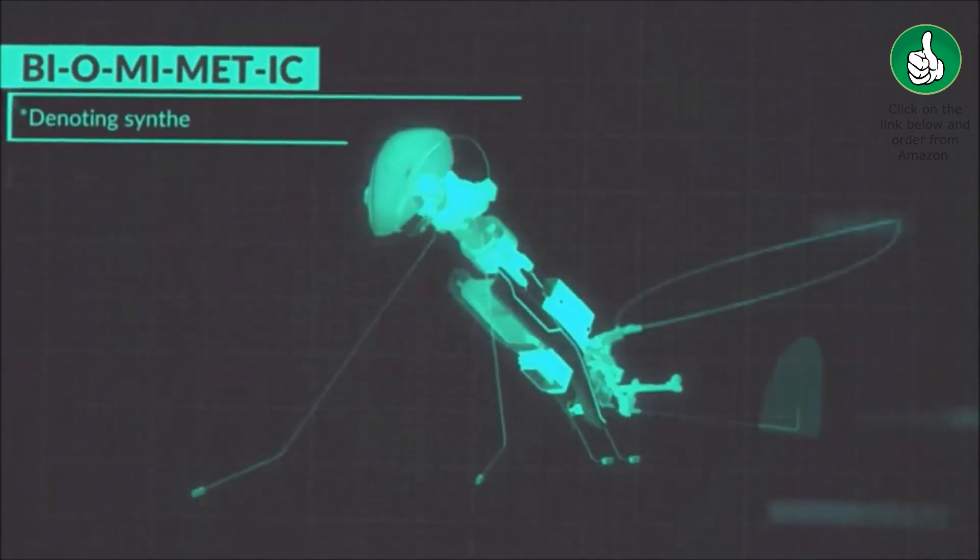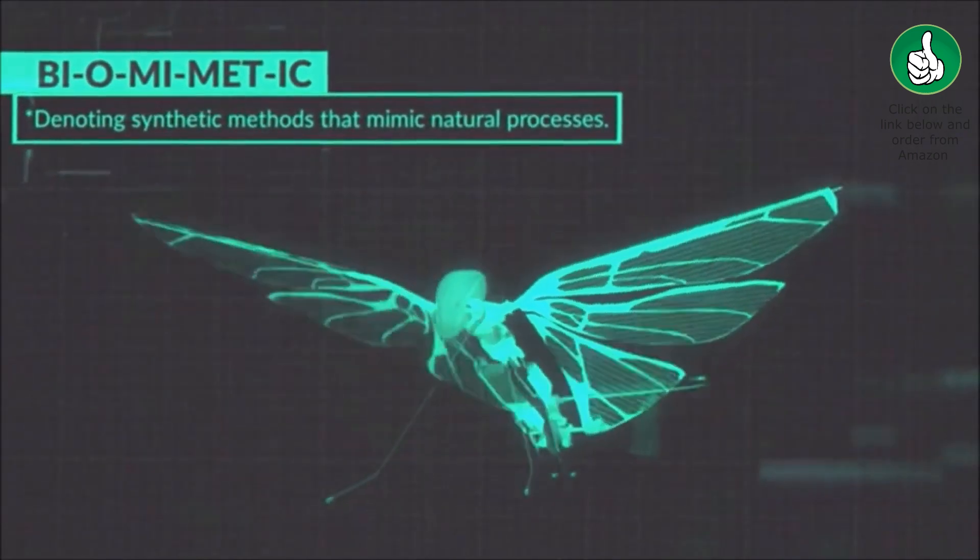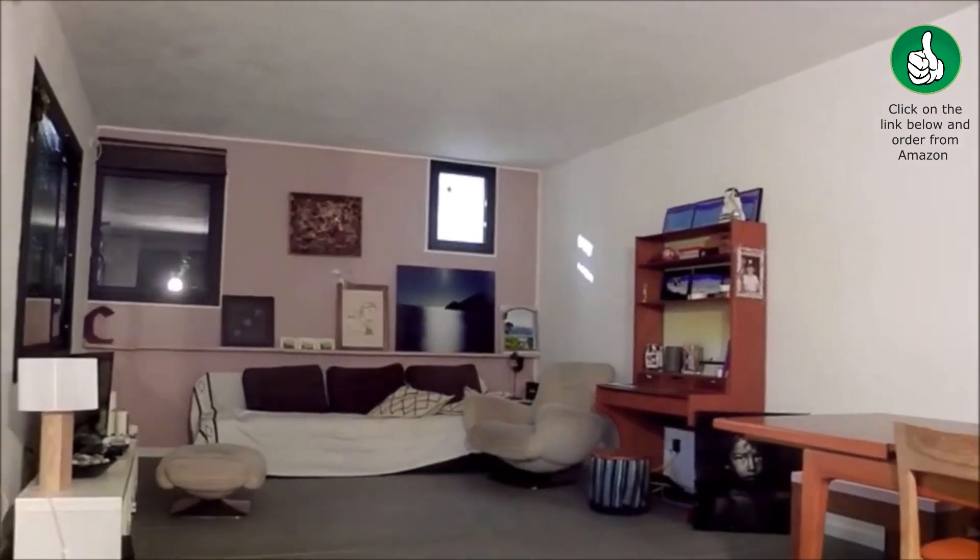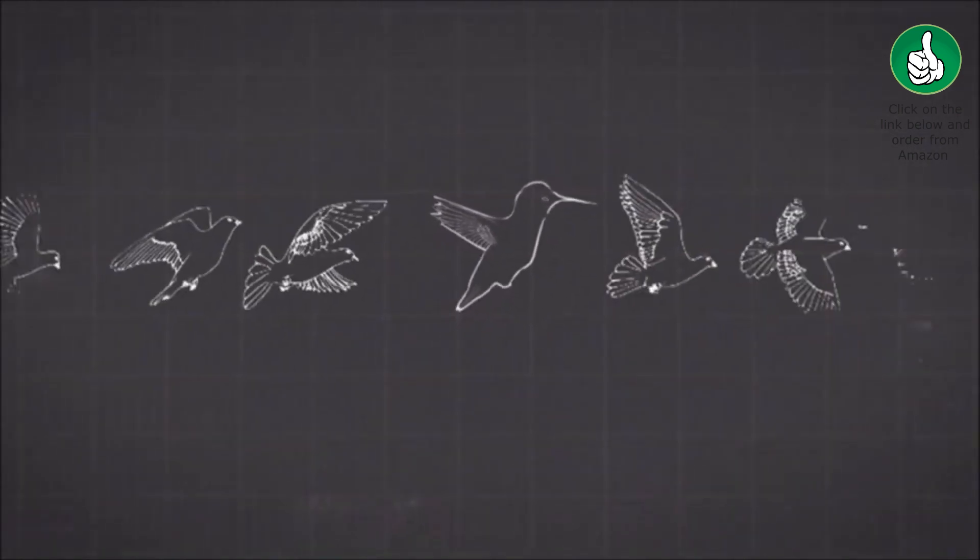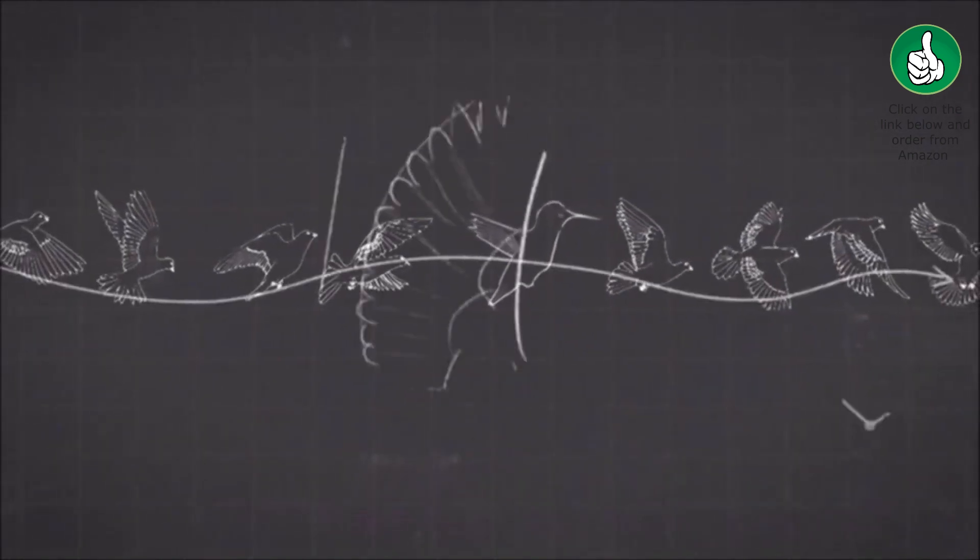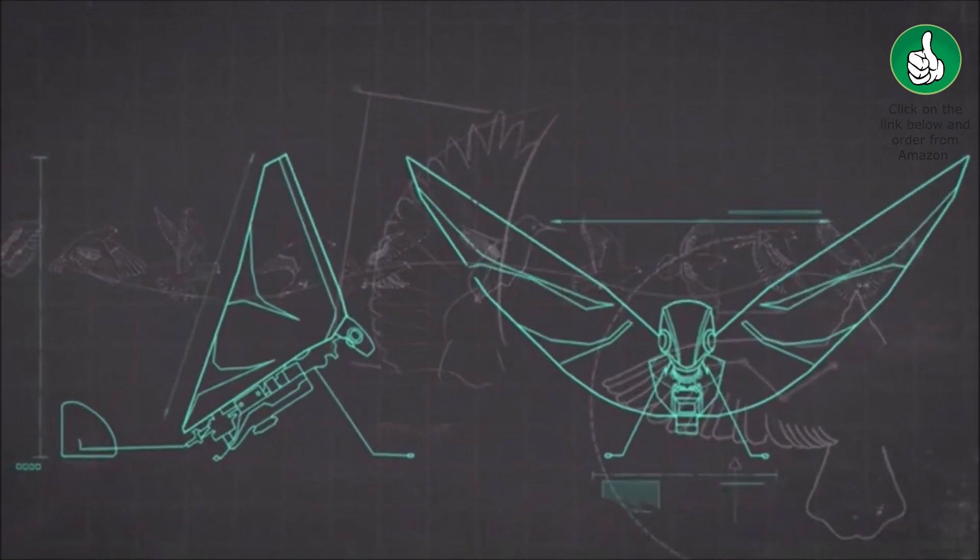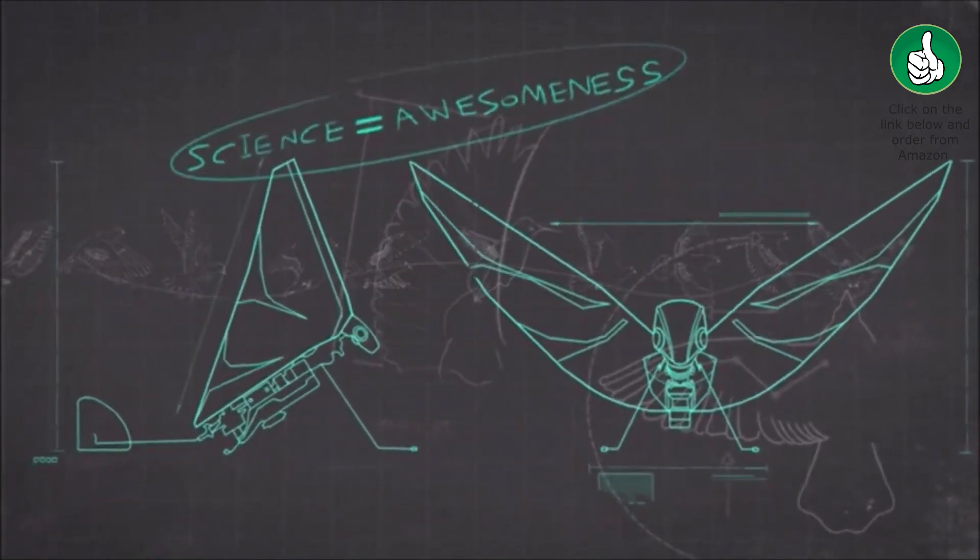MetaFly flies using a unique method called biomimetics, denoting synthetic methods that mimic natural processes. You know how a bird flies into your house and can navigate around everything without hitting anything? MetaFly can do that, because it mimics the natural movement of the bird with its synthetic wings. See what we did there? That's science explaining awesomeness.